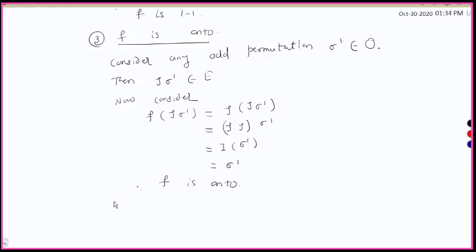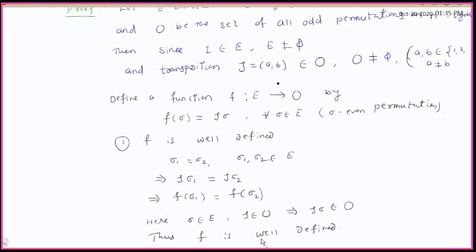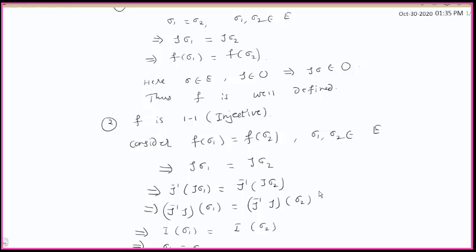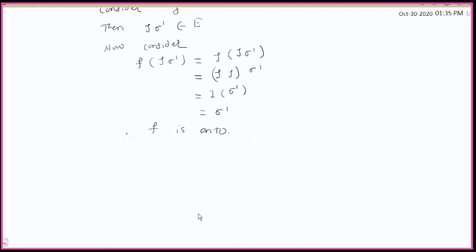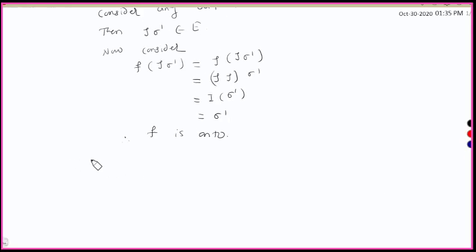From steps one, two, and three: f is a well-defined function, f is injective, and f is onto. This means we have a one-to-one correspondence between even permutations and odd permutations. Therefore, the number of even permutations is equal to the number of odd permutations.